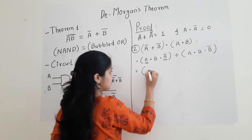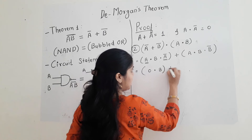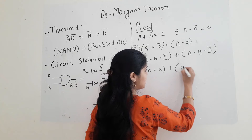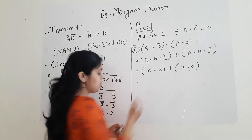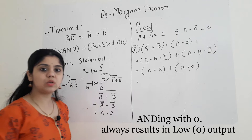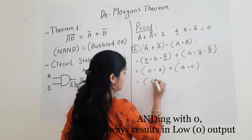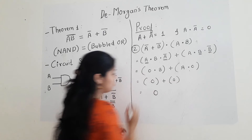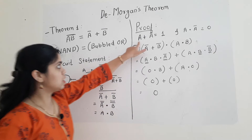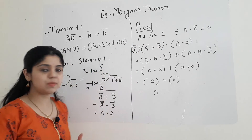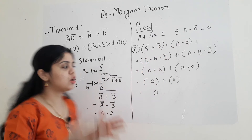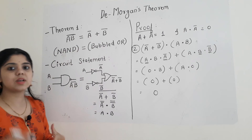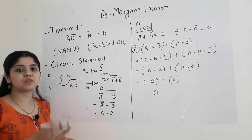I will replace this: 0 dot B plus, and here also B into B bar will give me 0, so I replace it as A dot 0. Any variable multiplied by 0 will give me 0 only, so replacing: 0 plus 0, and 0 plus 0 gives me 0. Now if you observe, the first theorem has been proved as well as the second theorem. So by using the Boolean laws, I can say that my LHS is equal to RHS and hence the first DeMorgan's theorem has been proved.